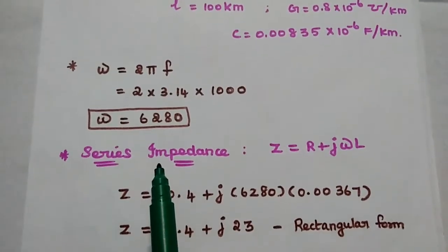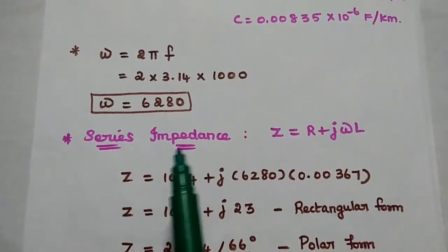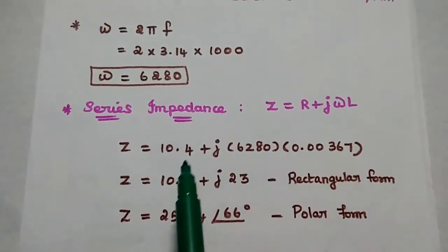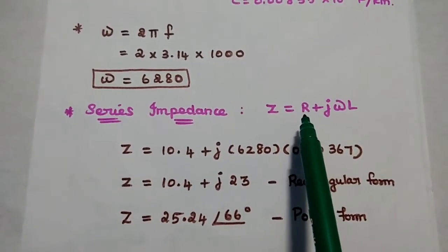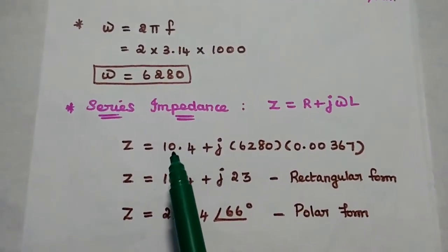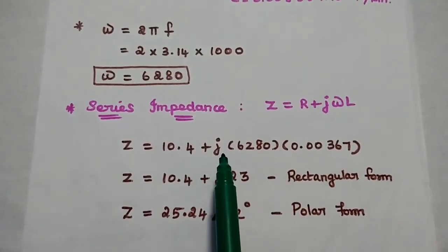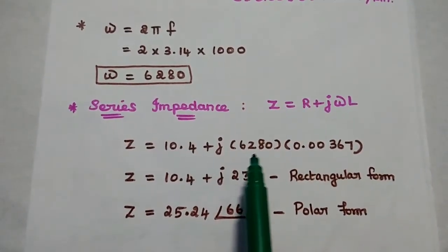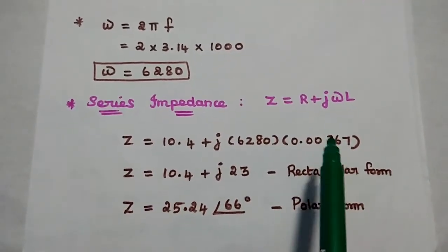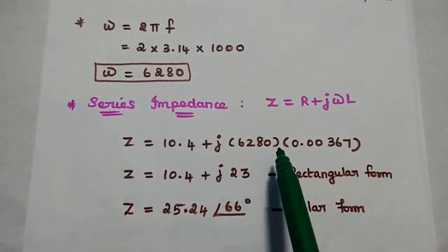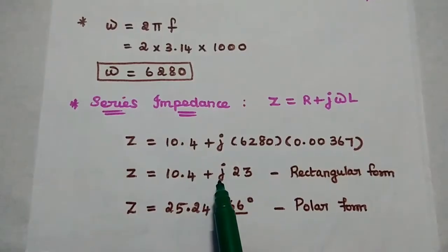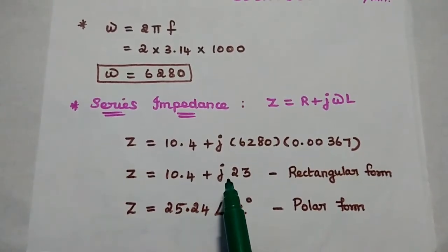After that, we can find out the series impedance value. Z is equal to R plus jωL. Substituting the values of R, omega, and L: Z is equal to 10.4 plus j × 6280 × 0.00367, giving us 10.4 plus j23. That is the series impedance value in rectangular form.